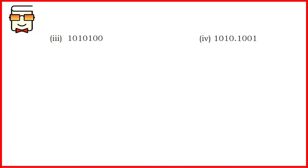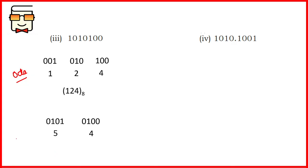For the third part of question 8, create groups of 3, assign the octal digits for each group, combine them together, and you get the final answer. For the hexadecimal conversion of the same number, create groups of 4 from right to left, append a 0 at the beginning, get two groups, and the answer is 54 in hexadecimal.